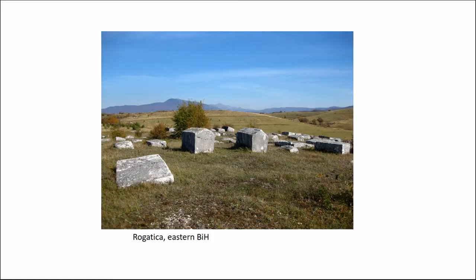The medieval Bosnian landscape of death consists of incredibly interesting tombstones referred to as Stećak — necropolis. These are huge monoliths found all around Bosnia, now under UNESCO protection as part of the tripartite heritage of Bosnia, Croatia, Serbia, and Montenegro, but located for the most part in Bosnia.